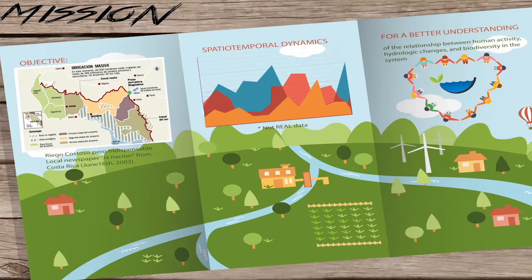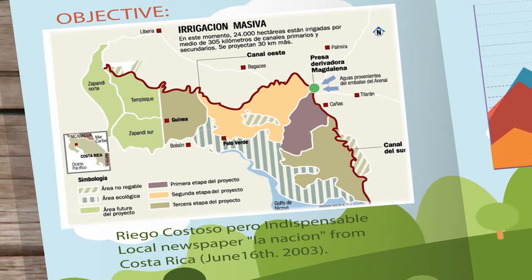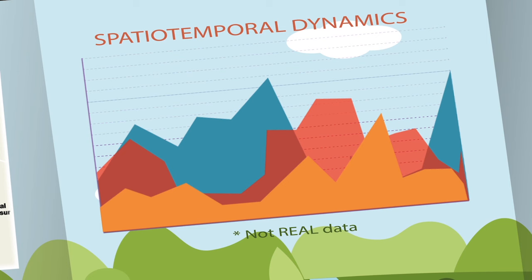The objective of this project is to describe and model the spatiotemporal dynamic of the different variables influencing the hydroperiod of the wetland, and investigate whether the hydrological signal in the upper and mid-watershed influences the coastal wetland degradation.